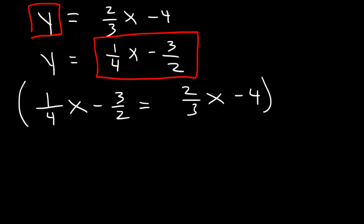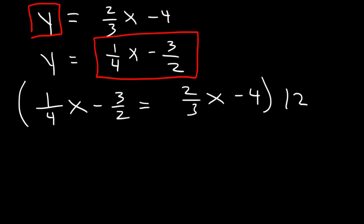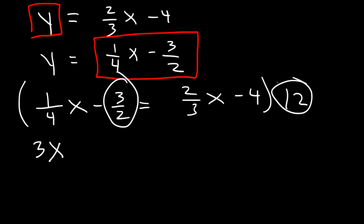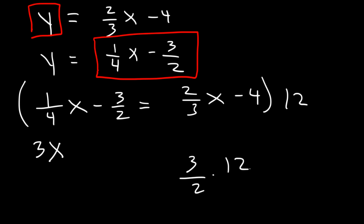So let's multiply everything by 12. 1 4th x times 12 — that's 12 divided by 4 times x. 12 divided by 4 is 3, so that gives us 3x. Now what's 3 over 2 times 12? 12 times 3 is 36, and 36 divided by 2 is 18. You can also divide 12 by 2 to get 6, and then multiply by 3, which gives the same result of 18.